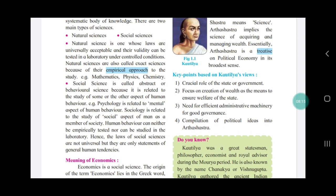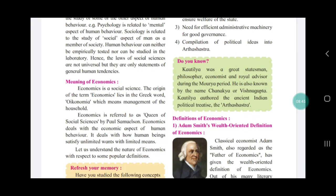To recap: science is the systematic body of knowledge. There are two types of science — natural science and social science. Natural science laws are universally applicable and it is also called true science. Social science is called abstract science and its laws are not universally applicable. Now let's move to the meaning of economics.